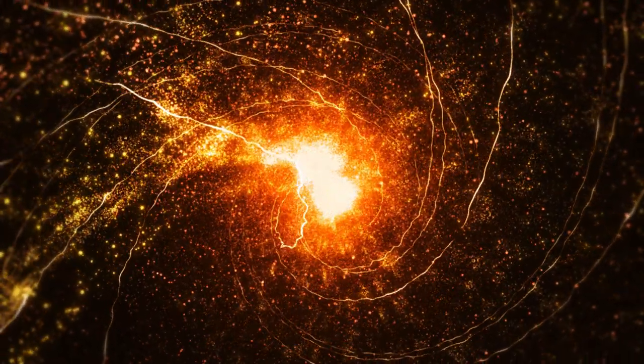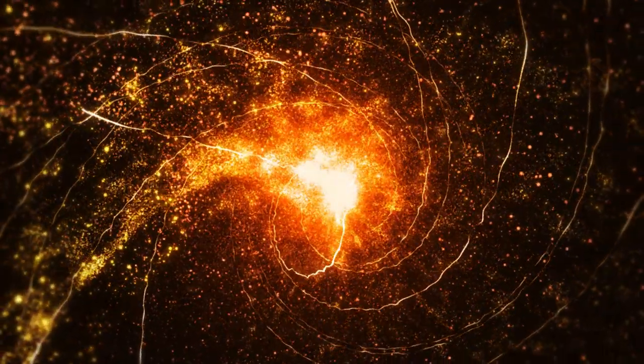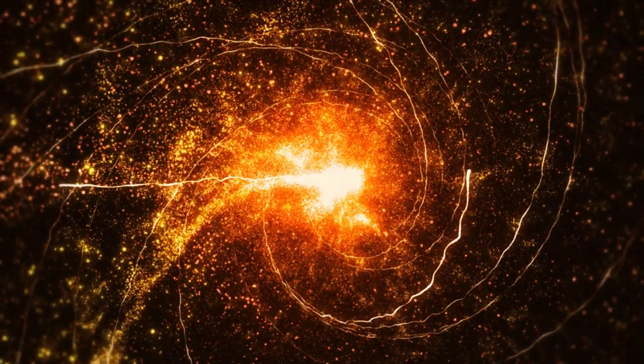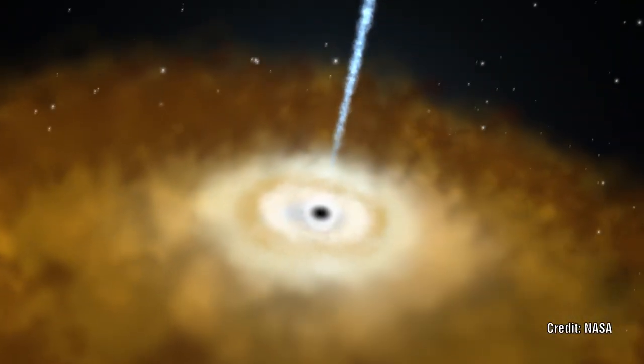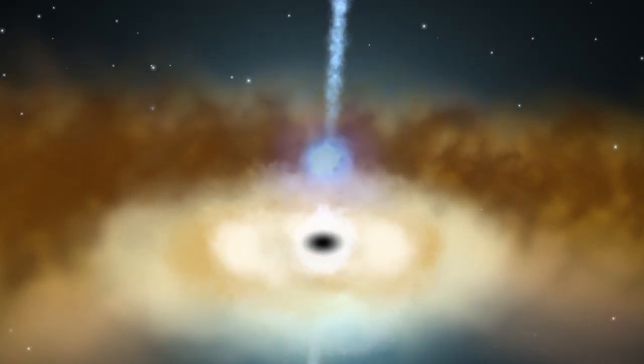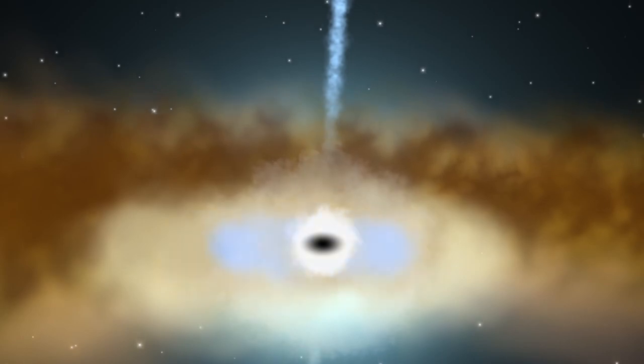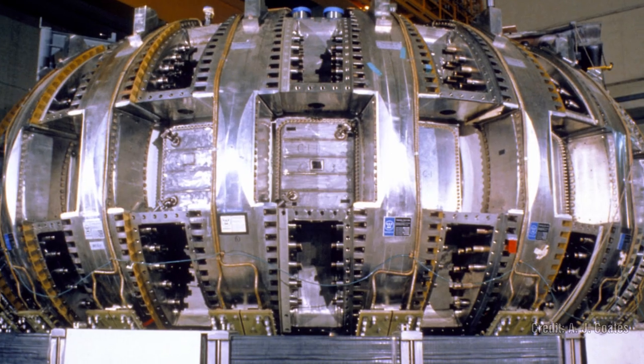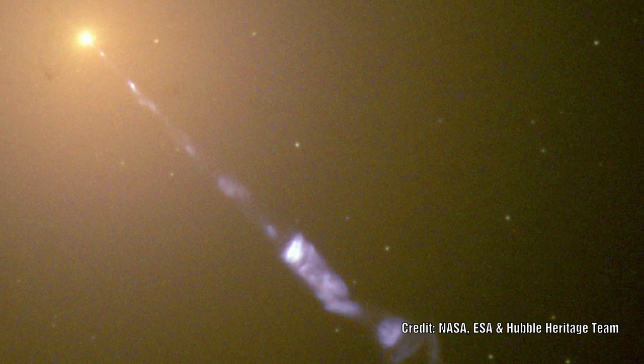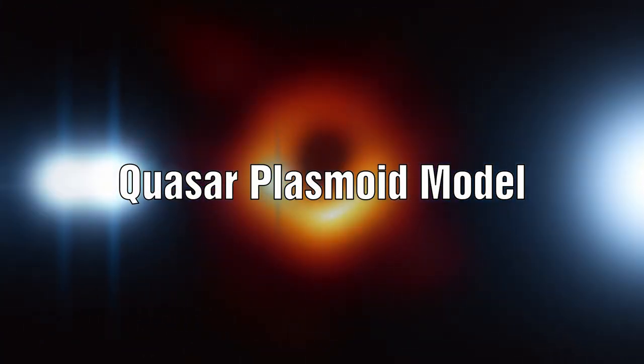They believe that the only thing capable of powering this is a supermassive black hole at its centre with an accretion disk that can magically create jets above the poles of the black hole. Instead, what we will examine is a common sense approach which will use our understanding gained from laboratory experiments to match this phenomena to something very real and not so distant at all. So let's find out what a quasar is in a plasma and electric universe.